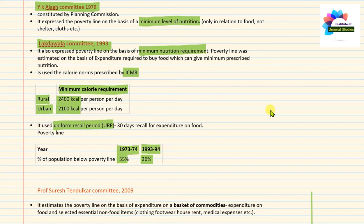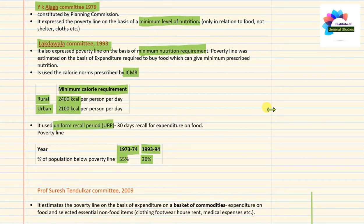Using the Uniform Recall Period, the population below the poverty line was calculated. This method was applied to 1973-74 NSSO data. It was found that in 1973-74, India's population below the poverty line was 55%. Between 1973 and 1993, poverty reduced by 19% as per the Lakdawala Committee report.